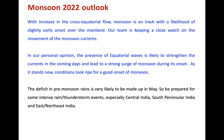We would like to end with the Monsoon 2022 outlook. With an increase in the cross-equatorial flow, monsoon seems to be on track with the likelihood of an early onset over the mainland. Our team is keeping a close watch on the movements of the monsoon current and we will come up with an update by mid-May about what exactly is going to happen. The presence of an equatorial Rossby wave is likely to strengthen the currents in the coming days, and there is a possibility of a strong surge of monsoon during the onset. So let's not be surprised if a strong onset happens. As of now, conditions look ripe for a good onset of monsoon. The deficit in pre-monsoon rains is very likely to be made up in May, so we should be prepared for some intense rains and storm events, especially for central India, south peninsular India, and east and northeast India.